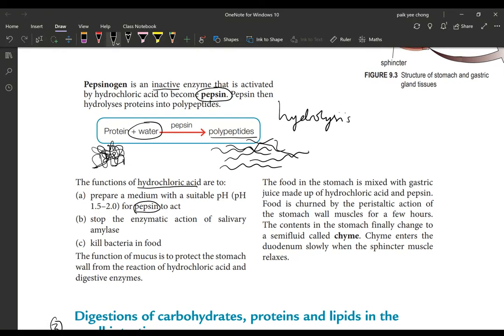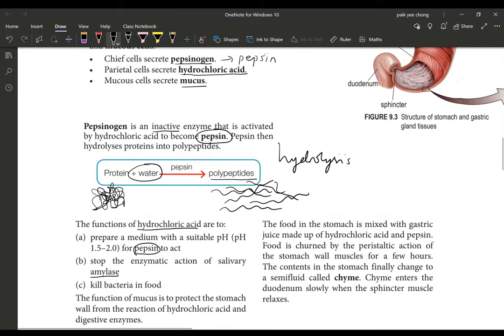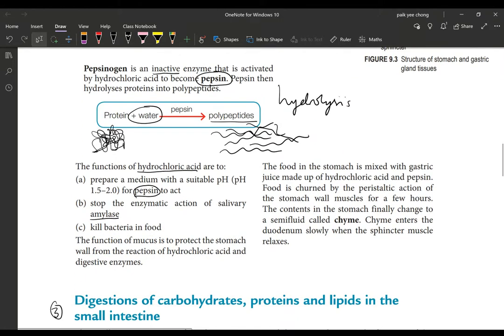Another action of the acid in your stomach is to stop the enzymatic action of salivary amylase. At the moment when your starch enters your stomach, it will temporarily stop digestion because the condition inside your stomach is acidic, and salivary amylase requires neutral condition. Even though you have undigested starch and maltose, it will temporarily stop digestion in the stomach. You will also kill the bacteria - this acid is very acidic so it's able to kill bacteria in the food. The function of mucus is to protect the stomach wall from being hydrolyzed or corroded by the hydrochloric acid and enzymes.